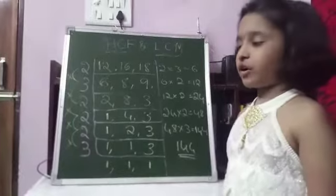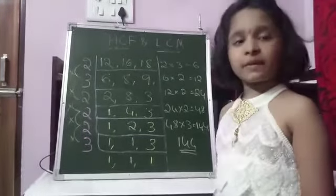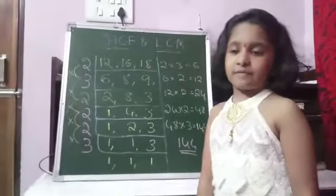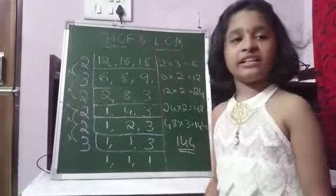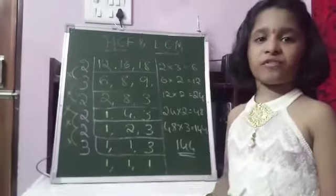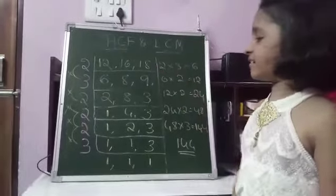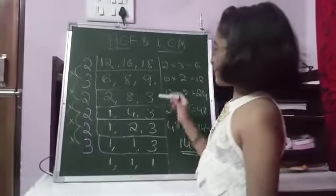A least common multiple has some factors of its own. We need to follow these steps to find the least common multiple of an example like 12, 16 and 18. So let us start.